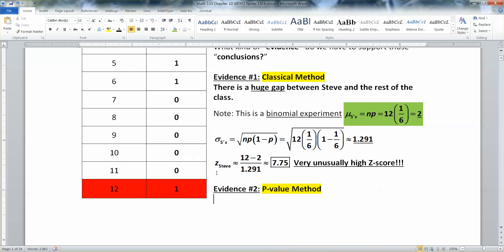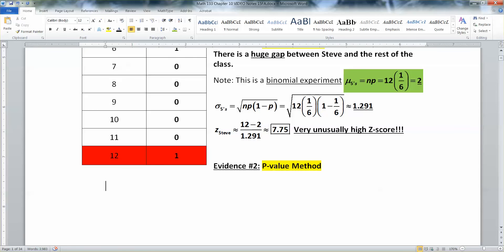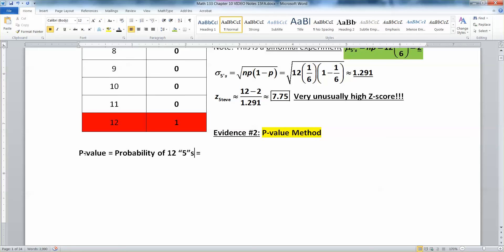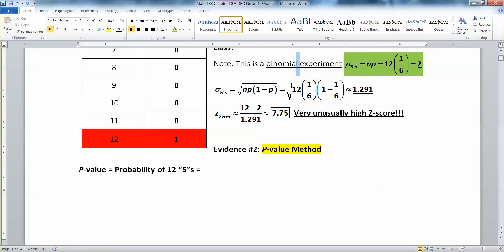It's possible that he just had a really, really unusual lucky 12 out of 12 fives. But let's find the probability of that. So p-value stands for probability. So the probability is your p-value. So that p-value will be the probability of getting 12 out of 12 fives. Well, remember, though, this is binomial, right? It's a binomial experiment. So we actually know exactly how to get those probabilities.